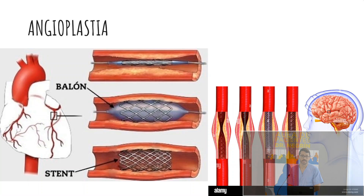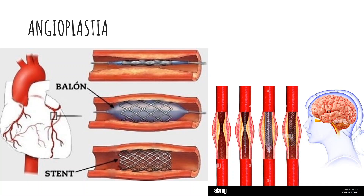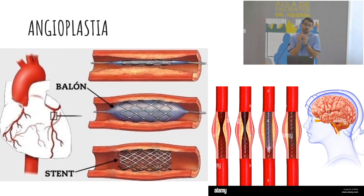En el momento agudo se puede tratar gracias al cateterismo, que básicamente mete un tubito, llega hasta la arteria, infla un balón, abre la arteria y pone un stent para que se quede esa apertura de la luz y se mantenga en el tiempo. Eso se puede hacer también en las piernas o en el cerebro, en el caso de que el vaso lo permita, porque si el vaso es muy pequeño, ahí no llegan los tubitos.